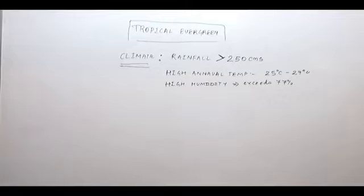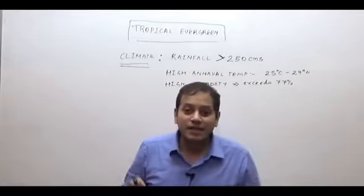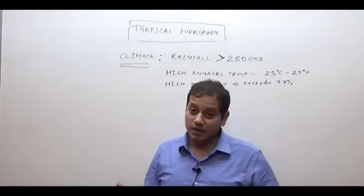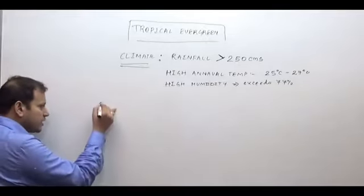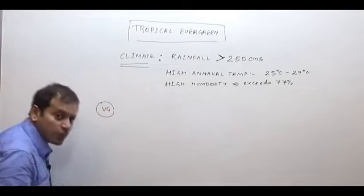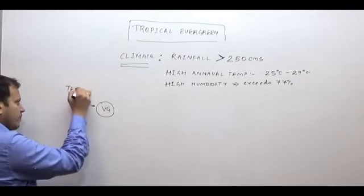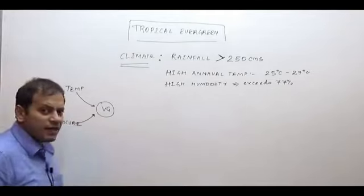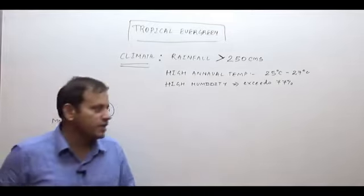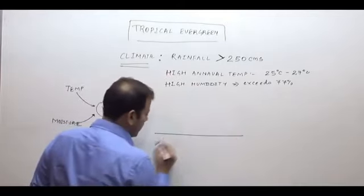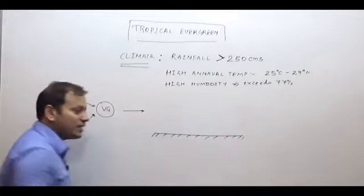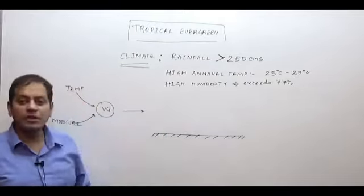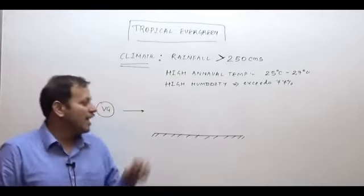Why are these known as evergreen forests? For vegetation growth, two inputs are required: temperature and moisture. If there is high temperature throughout the year and high moisture throughout the year, the trees grow throughout the year. The average annual rainfall is high, and because of high annual temperature, both inputs are continuously available, and therefore the trees grow throughout the year.